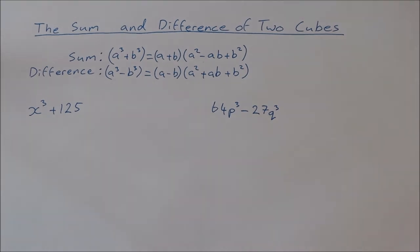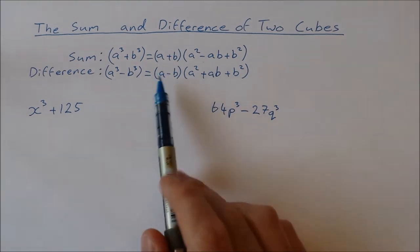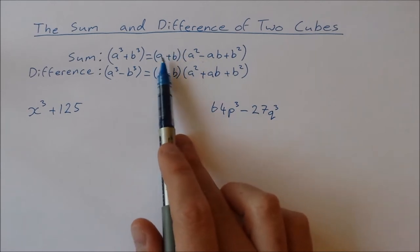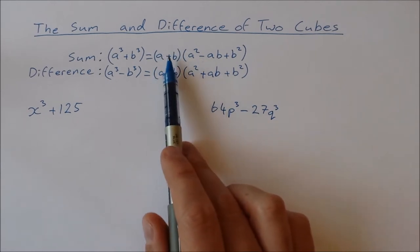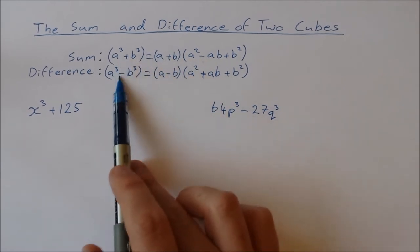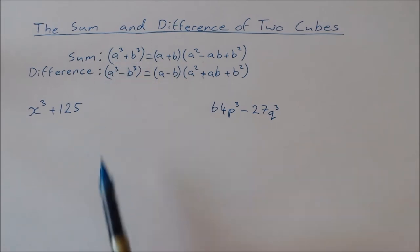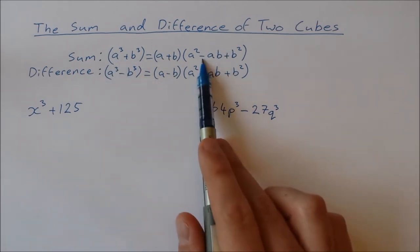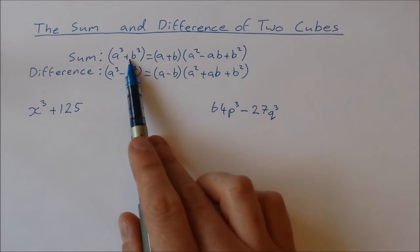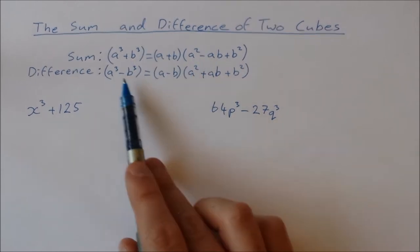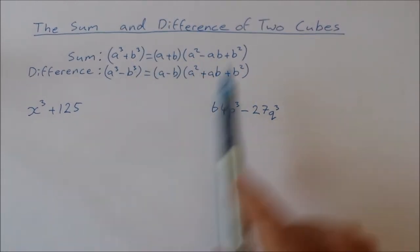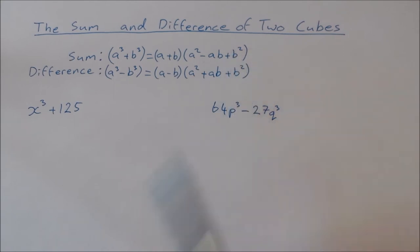Now the way we remember which formula is which, in the first set of brackets, the a plus b or the a minus b, the sign is actually the same as the thing you're trying to factorise. In the second bracket, the first sign is going to be different. So here it's plus and minus, minus and plus, and then the second sign that's always going to be plus.